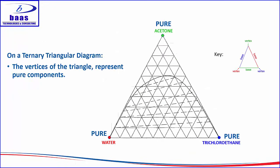Let's take a few minutes to unpack how the ternary triangular diagram works. Looking at the triangle, the corners are called vertices and the sides are termed the bases. The vertices of the triangular diagram represent pure components — here you have pure acetone, pure water, and pure trichloroethane.